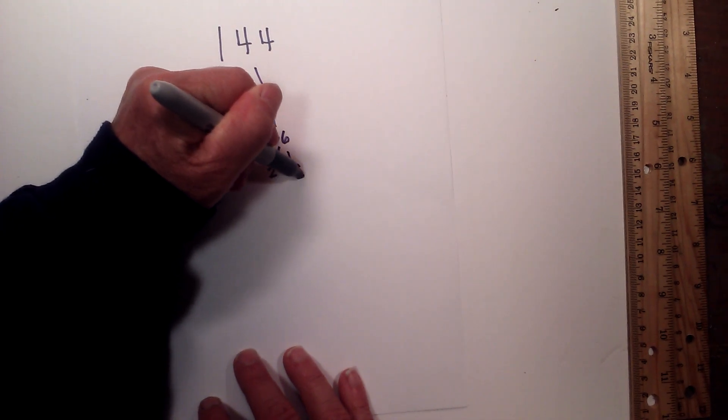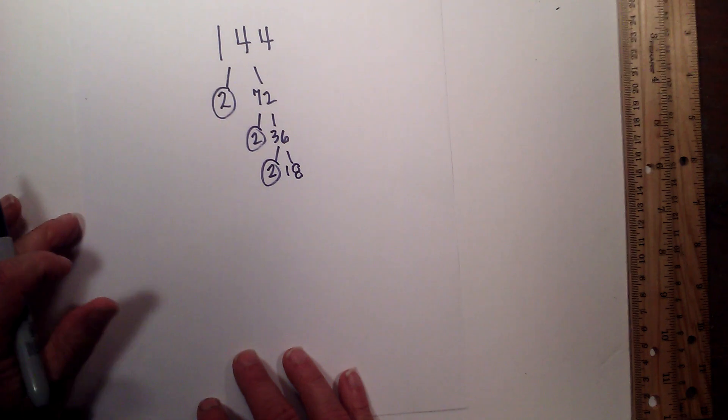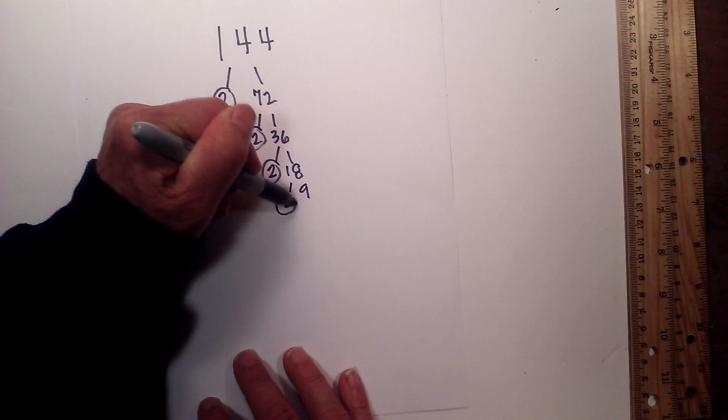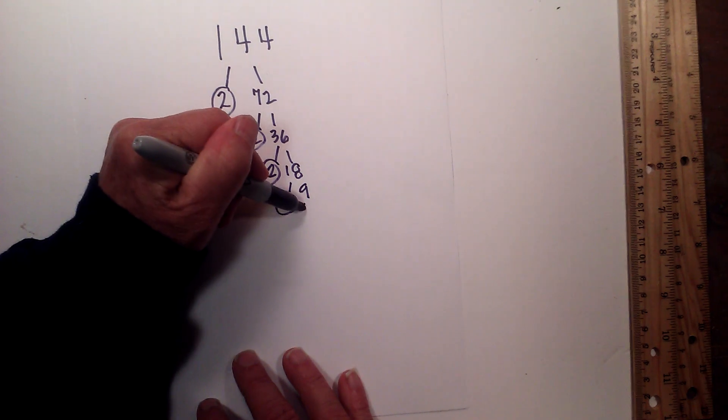Now 2 times 18 equals 36. Circle the 2. Now 2 times 9 equals 18. Circle the 2 because that is prime.